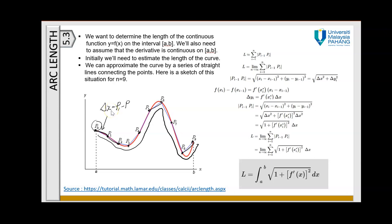Delta x is equal to pₙ minus pₙ₋₁, depending on how many points you want to divide your curve into. To find the length of the curve, we calculate the summation of all these straight lines from a to b, which represents the length of our curve.